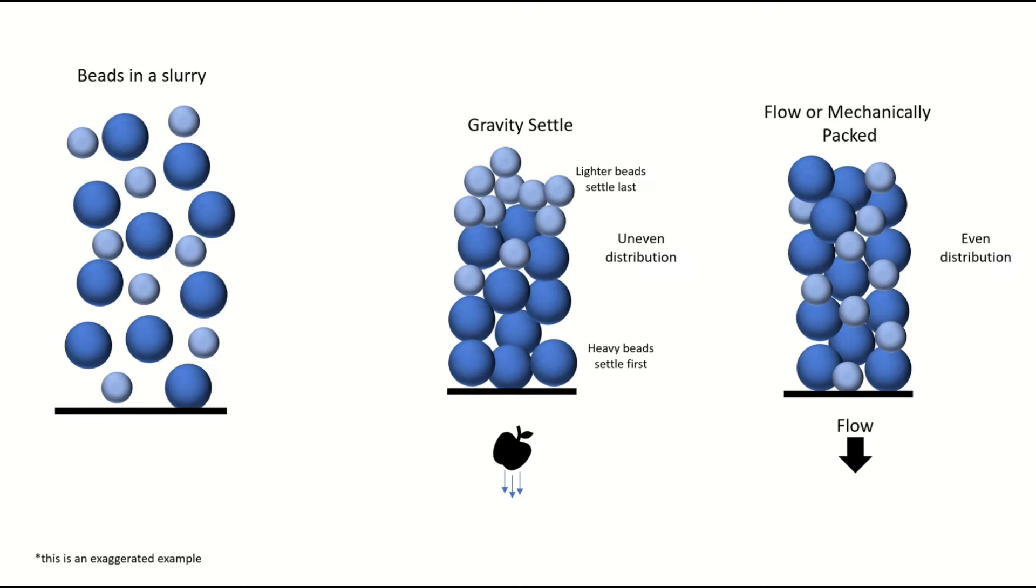Alright, I just want to say one more thing about beads floating around in the slurry before we put this column on the system and start running it. We want to avoid letting beads settle by gravity, and that's because it can cause obvious problems with uneven distribution because heavier beads will tend to settle on the bottom and lighter beads will tend to settle on the top. This can cause back pressure issues.